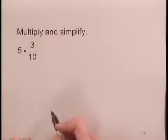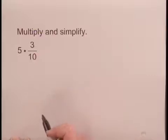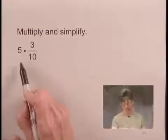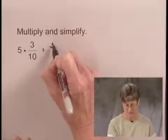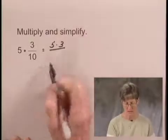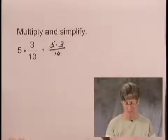Now when we multiply using fraction notation, we multiply numerators and we multiply denominators. And we can think of 5 as 5 over 1. So multiplying the numerators, we'd have 5 times 3. And multiplying the denominators, we'd have 1 times 10, or 10.